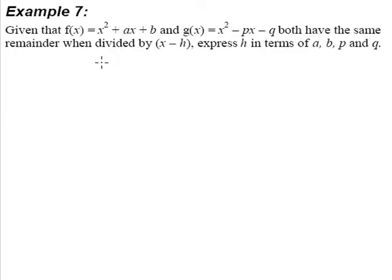Example 7 is one example with no numbers at all. Given that f(x) = x² + ax + b and g(x) = x² - px - q both have the same remainder when divided by x minus h, express h in terms of a, b, p, and q.